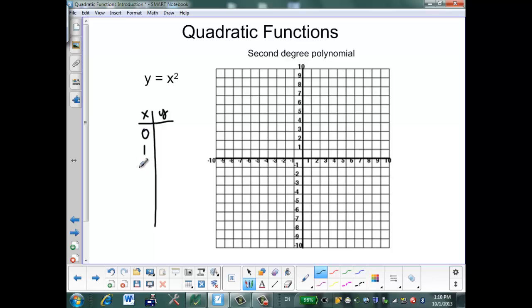I'm going to pick 0, 1, negative 1, 2, negative 2, 3, and negative 3.